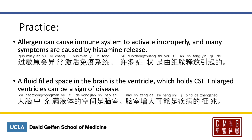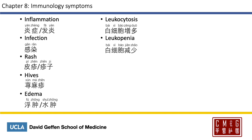Next time your aunt tells you that you have water in your brain, just say that it's normal, as long as the pressure is not too high. To say inflammation, you can say 炎症 or 发炎. Infection is 感染. Rash is either 皮疹 or 疹子. Hives is 荨麻疹. Edema is either 浮肿 or 水肿. Leukocytosis is 白细胞增多, and leukopenia is 白细胞减少.